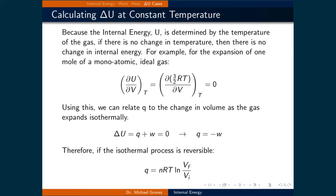The same could be said if we're taking the derivative with respect to pressure. Using this, we can relate heat to the change in volume as the gas expands isothermally. Since the change in internal energy is equal to heat plus work, and it's also equal to zero, then we can rearrange this to write that heat is equal to the negative work. Therefore, if the isothermal process is reversible, then the heat is equal to positive NRT times the natural logarithm of the final volume over the initial volume. As the gas expands and does work, heat must go into the system to offset the energy the system is outputting so that the system remains at the same temperature.